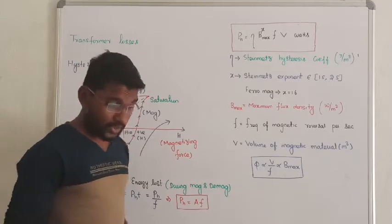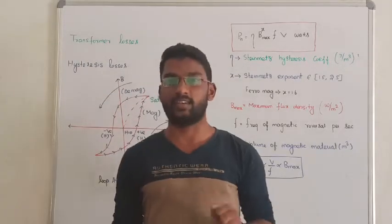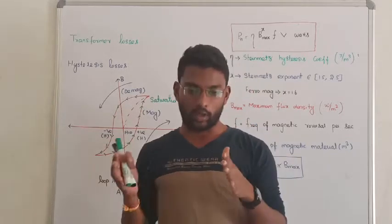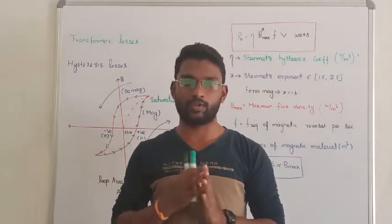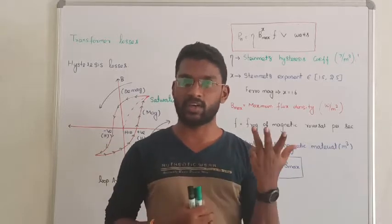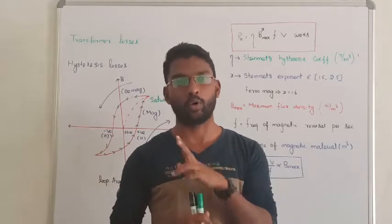Hello guys, next we are going to see the various losses in the transformer. So there are two losses - one is copper losses and another one is core loss. We covered transformer phase diagram and no-load level, and next we are going to see the four losses.